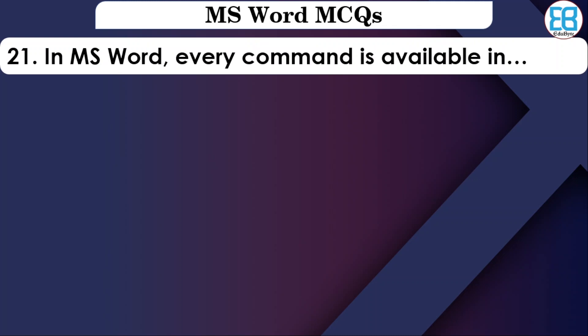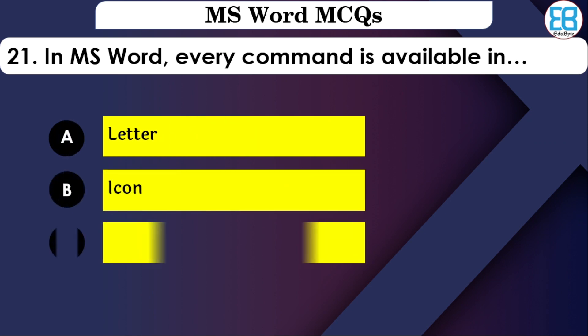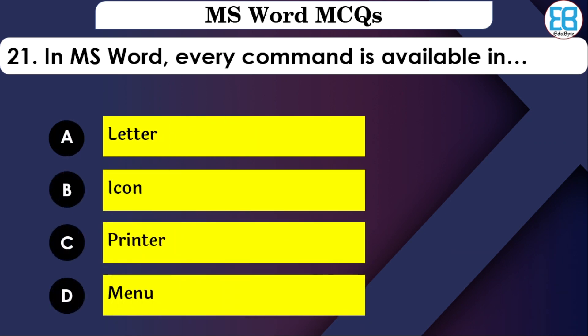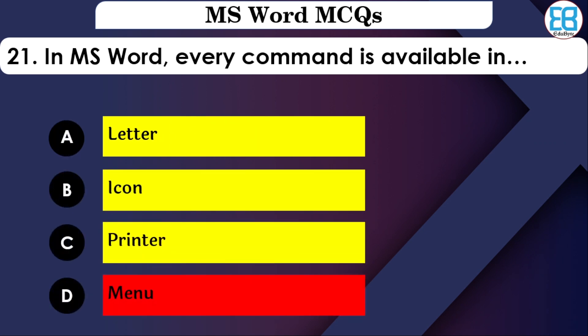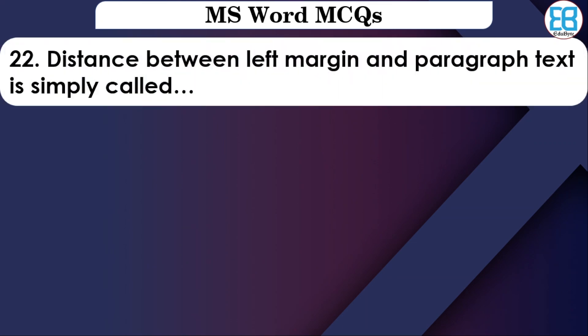In MS Word, every command is available in which area? The options are: Letter, Icon, Printer, or Menu. The correct option is Menu — in MS Word, every command is available in the Menu.